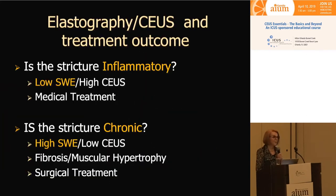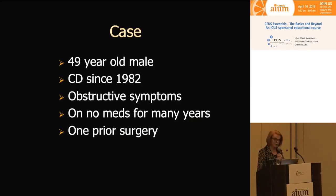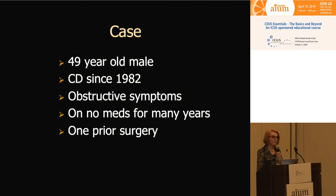The biggest contribution that ultrasound makes, I think, is in assessment of strictures in patients with IBD. We ask: is the stricture inflammatory — in which case the patient would likely have medical therapy — or is the stricture chronic — in which case the patient would go for surgical treatment? We believe that low shear wave elastography and high CEUS associates with an inflammatory stricture, whereas high shear wave elastography — very stiff bowel — and low vascularity will predict bowel that won't respond to medical therapy and should be surgically removed.